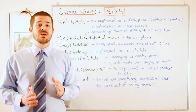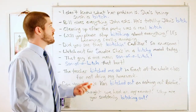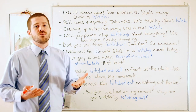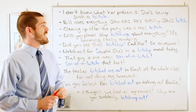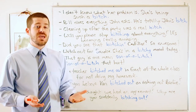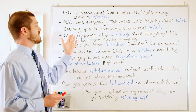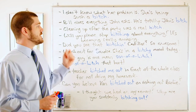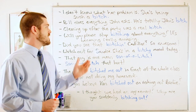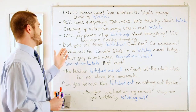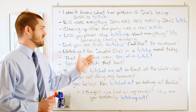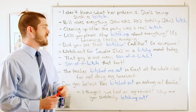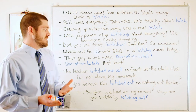Now let's look at some written examples. 'I don't know what her problem is, she's being such a bitch' — she's being unpleasant or difficult. 'Bill does everything John asks, he's totally John's bitch' — weak and submissive. 'Cleaning up after the party was a real bitch' — not fun and difficult. 'Will you please stop bitching about everything, it's becoming really annoying' — stop complaining. 'Did you see that bitchin' Cadillac?' — awesome car.